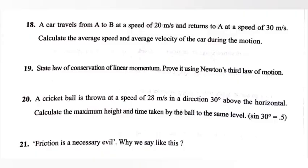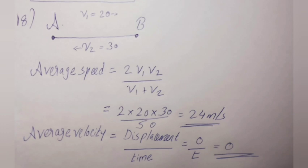Question 18: A car travels from A to B at a speed of 20 m per second and returns to A at a speed of 30 m per second. Calculate the average speed and average velocity of the car during the motion. Answer: Average speed is equal to 2v1 into v2 divided by v1 plus v2, which equals 2 into 20 into 30 divided by 50. So the average speed is 24 m per second. Average velocity is equal to displacement by time. So the average velocity is equal to 0.